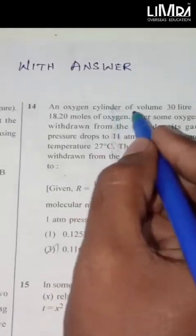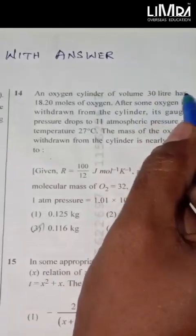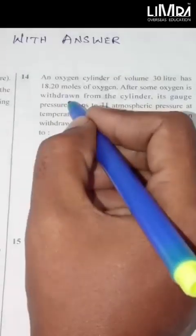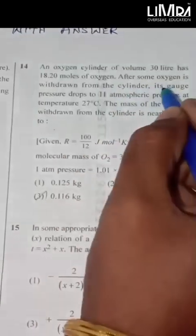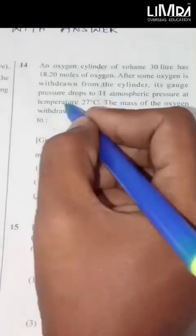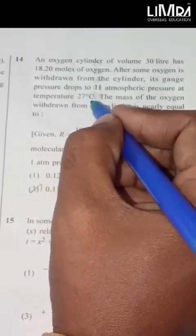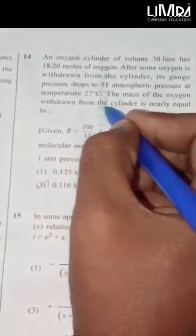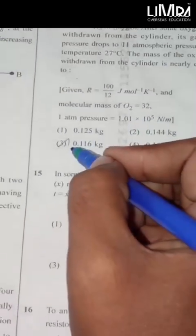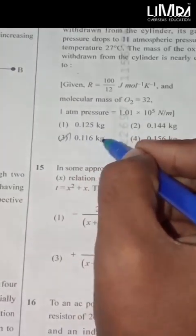An oxygen cylinder of volume 30 liter has 18.20 moles of oxygen. After some oxygen is withdrawn from the cylinder, its gauge pressure drops to 11 atmospheric pressure at temperature 27 degrees Celsius. The mass of oxygen is nearly equal to 0.116 kg.